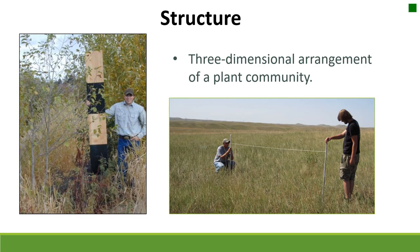Structure is another great attribute measured on rangelands — it's the three-dimensional arrangement of a plant community. This is really important when considering wildlife species, since we want diversity on the landscape including structural diversity: areas with hiding cover, thermal cover, and open areas, depending on the species you're managing for and your goals. Methods like the cover board method or the Robel pole are used to measure height, vertical density, and visual obstruction for different wildlife species.